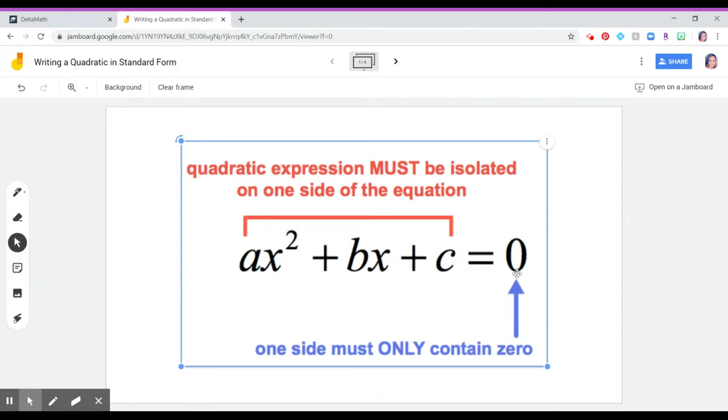But now we want to look at it when it's equal to zero. So our goal for today is to learn how to make sure that our equations look like this. That we have our quadratic term, our linear term, the bx, and then our constant, c.